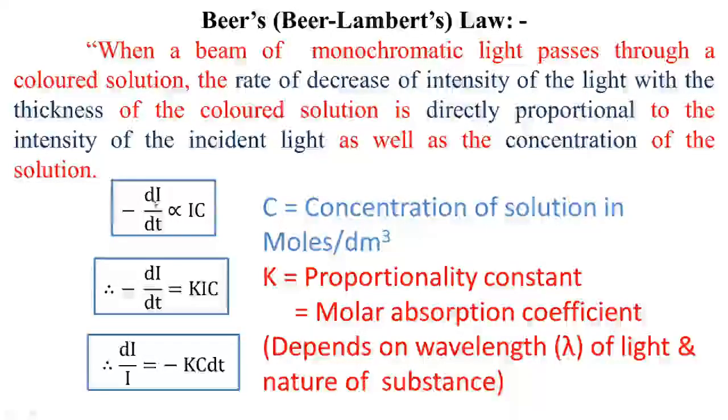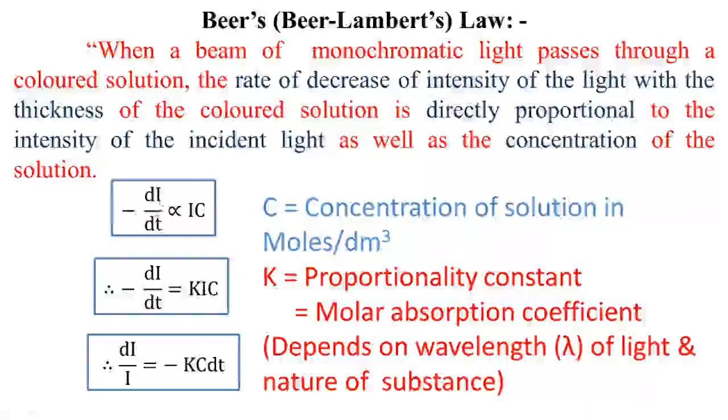This law mathematically can be stated by the equation minus dI by dt is directly proportional to I and C, where minus sign indicates the decrease of intensity of the light, dI by dt indicates the rate of change of intensity with the thickness t of the colored solution, and C is the concentration of the colored solution in moles per decimeter cube.